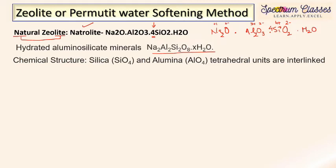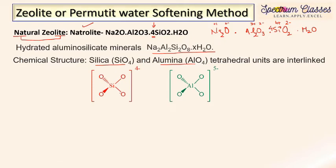Hydrated aluminosilicate minerals are represented by the chemical formula Na₂Al₂Si₂O₈. The structure contains silica and alumina tetrahedral units which are interlinked. Silica has +4 valency with four oxygens at -2 each, giving an overall charge of -4 on the silica tetrahedral unit. Alumina has +3 valency with four oxygens at -2 each giving -8, so the overall charge on the alumina tetrahedral unit is -5. These two tetrahedral units are arranged in a definite structure.